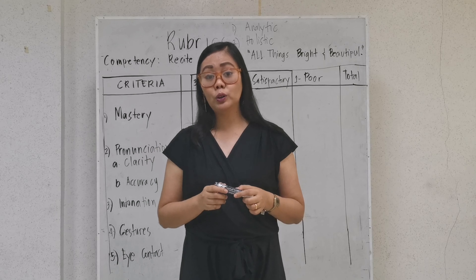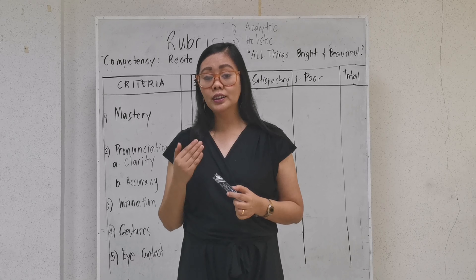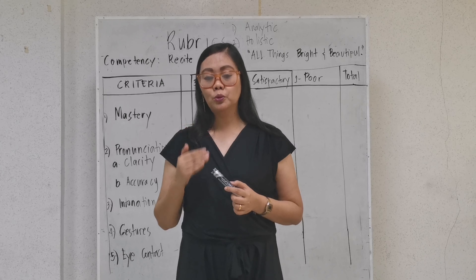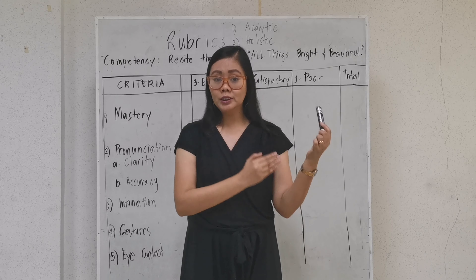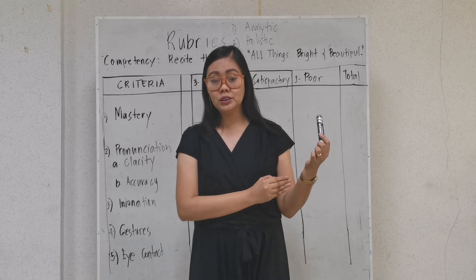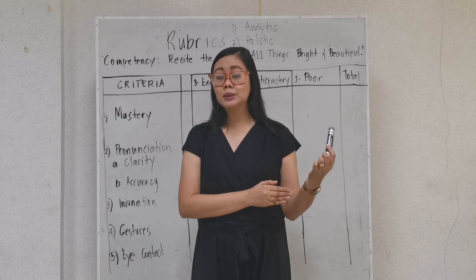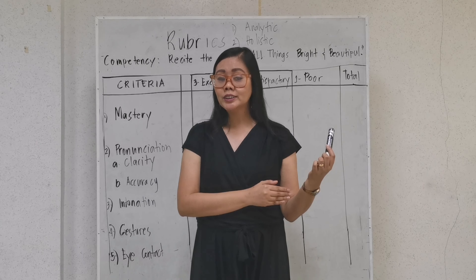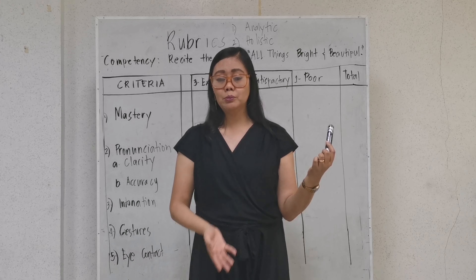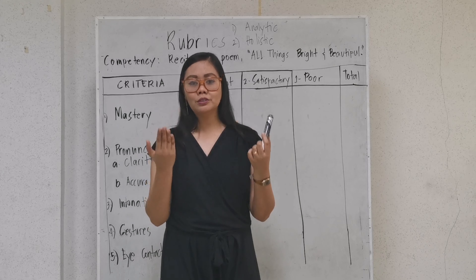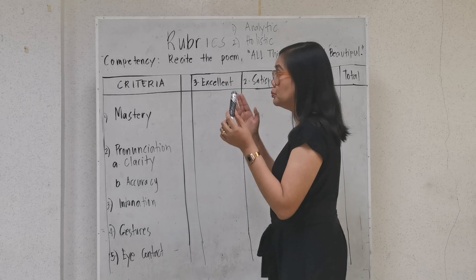I'll give you another insight about that later. But now, let us proceed with the discussion of how we are going to construct our rubric, considering the task we designed in the first video. The task we designed is performance-based and process-oriented. It is process-oriented because we evaluate during the time of performance. So how do we develop that? Let us look at the parts of an analytic rubric.